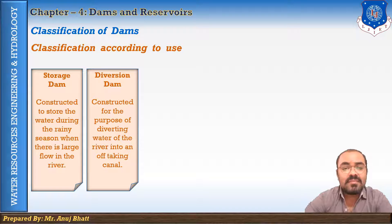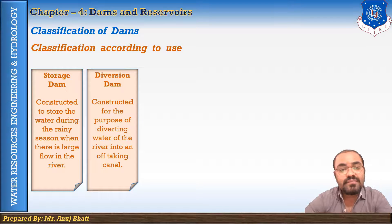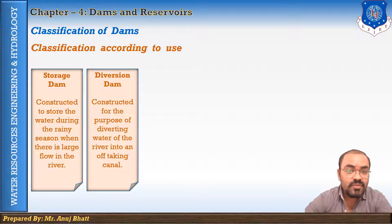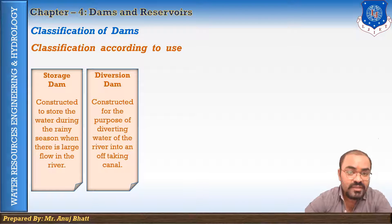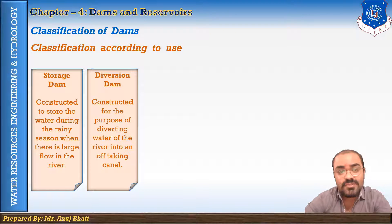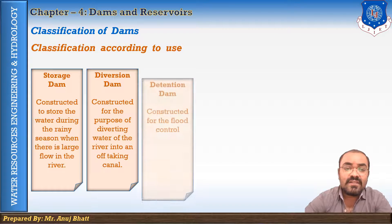The next is the diversion dam. A diversion dam is constructed for the purpose of diverting the water of the river into an off-taking canal. As discussed in the introduction, a weir is essentially a kind of diversion dam. A diversion dam is usually of low height and has a small storage reservoir on its upstream.